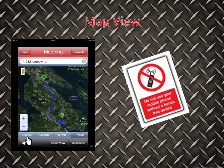You can watch this in either normal, satellite, terrain, or hybrid mode. This is hybrid mode right now — basically a photographic overlay on the Google map. You can also see it as street view, get directions, or navigate it much like a GPS.